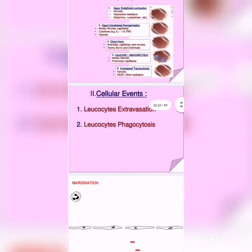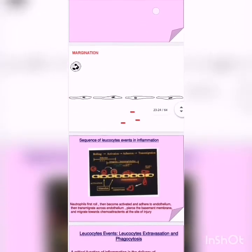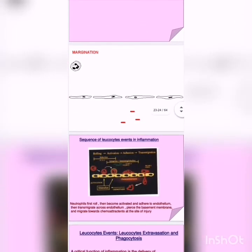Then we have cellular events. First is leukocyte extravasation and second is leukocyte phagocytosis. Within these, the steps are: margination and rolling, then adhesion, third is transmigration, fourth is chemotaxis, and finally phagocytosis.